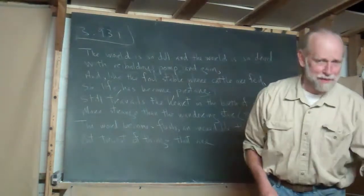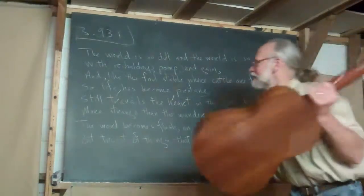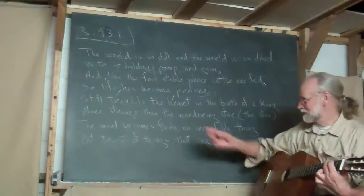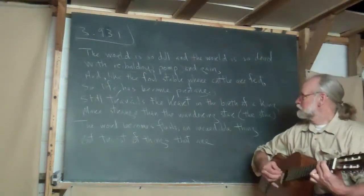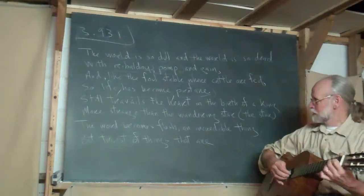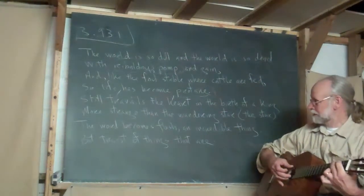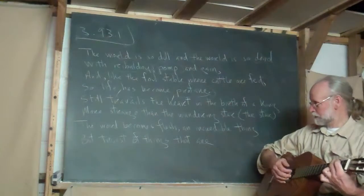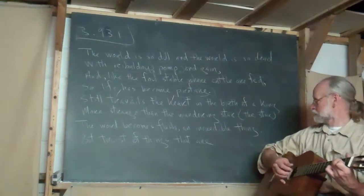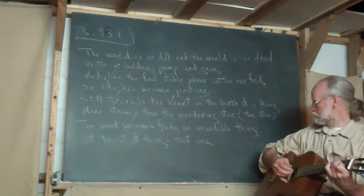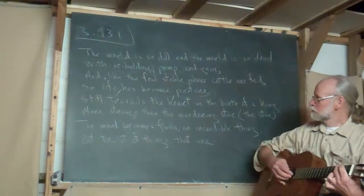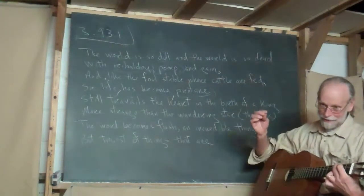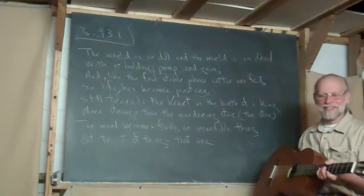Now that didn't go so bad, so let me, let me sing this one for you, too. Why not? I'm not proud. I really do like this. The world is so dull, dull, and the world is so dead, It's ribaldry, pomp, and gain. And like the foul stable where cattle are fed, So life has become profane. Still travels the heart in the birth of a king. More strange than the wandering star. The star, the word becomes flesh, an incredible thing. The truest of things that are. One, two, three, one. See, you could just dance to that so easily.